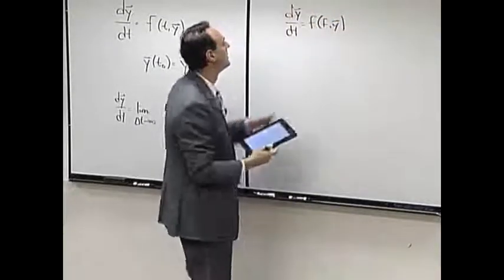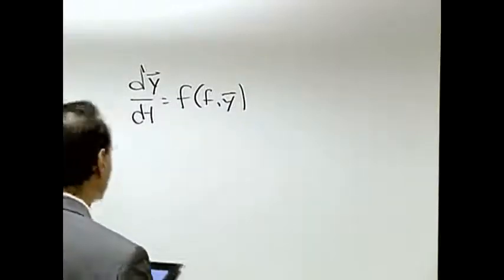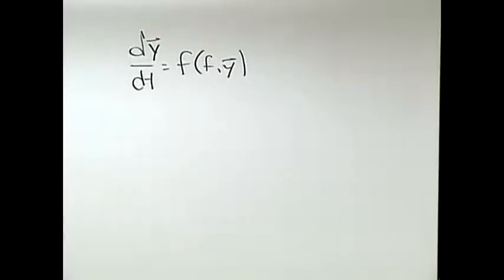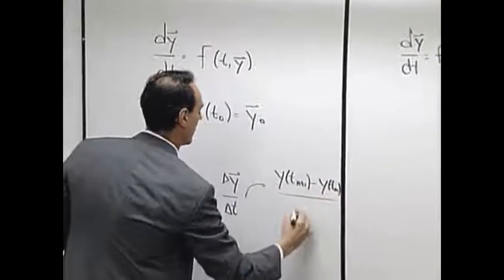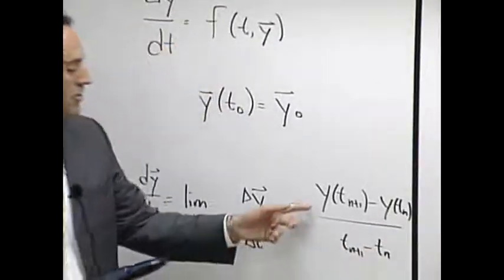What I'm going to do is say, well, I can't really calculate this, so I'll calculate something close. What I'll do is I'll take this thing here, and this thing here is something like y of t_n plus 1 minus y of t_n over t_n plus 1 minus t_n. So I've discretized.